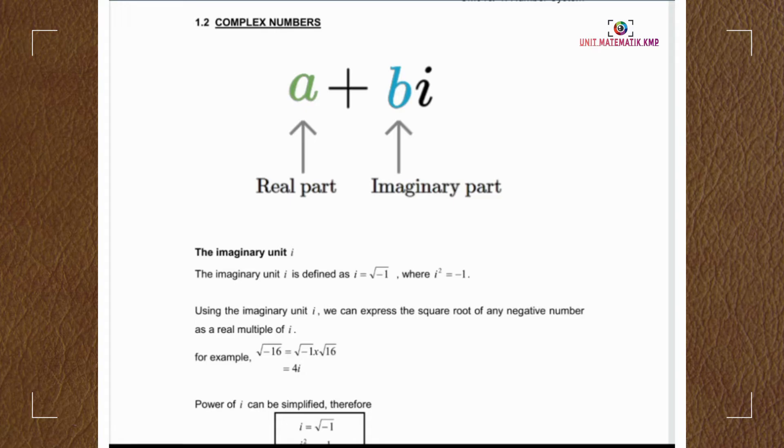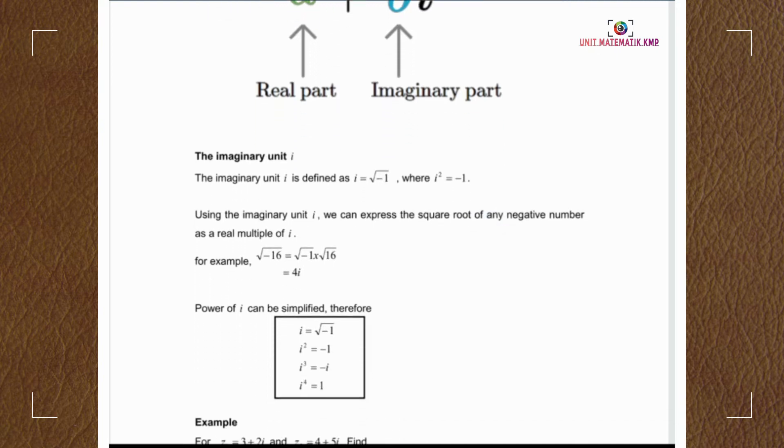Using the imaginary unit i, we can express the square roots of any negative number as a real multiple of i. For example, square root of negative 16 can be separated as square root of 16 times square root of negative 1. Square root of 16 equals 4, and square root of negative 1 equals i, so we have 4i.